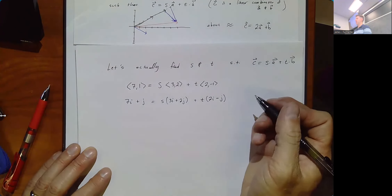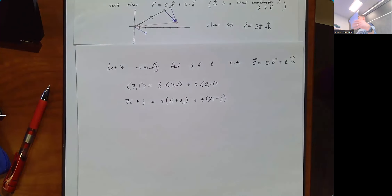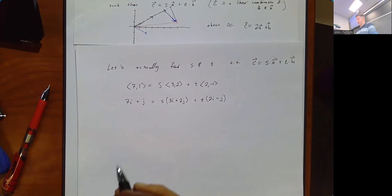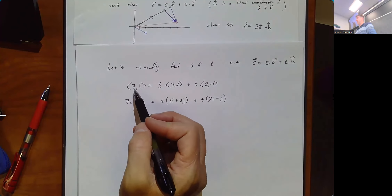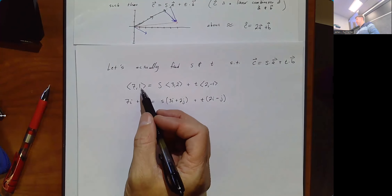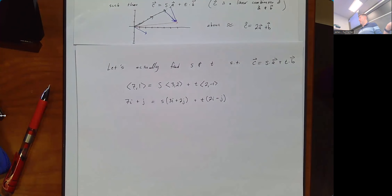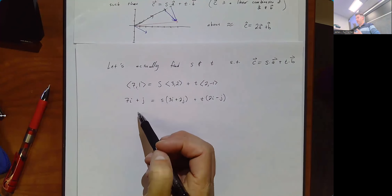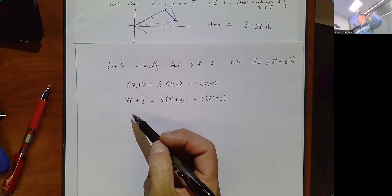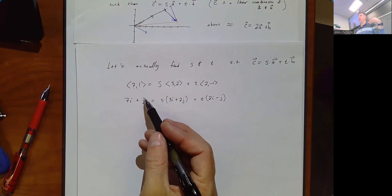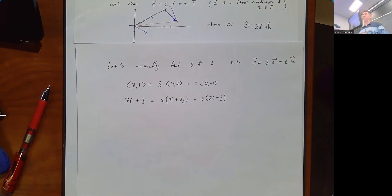For those thinking about writing vectors using i, j, and k notation — it's a very easy conversion. The x-component is that thing times i, the y-component times j, and if there's a z-component, it's that thing times k. You should be comfortable going back and forth between the two notations. I think of (7, 1) and 7i + j as the exact same thing.